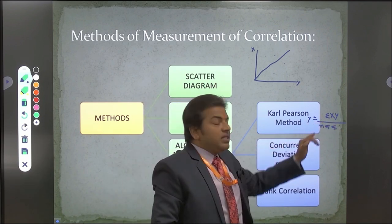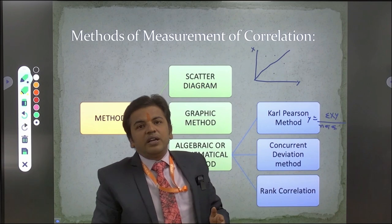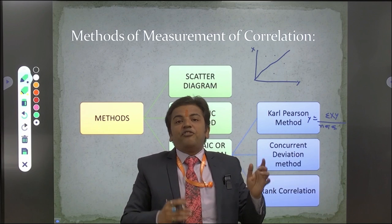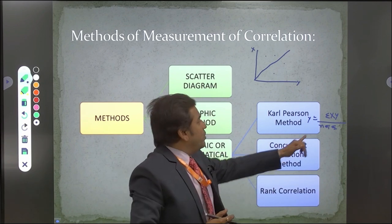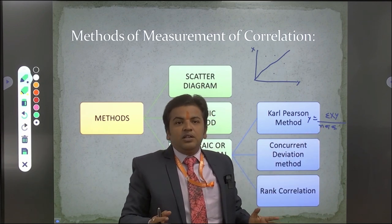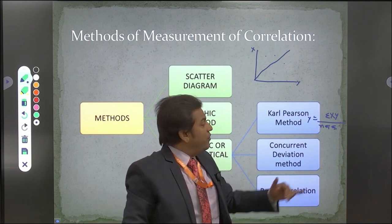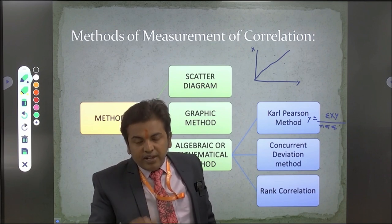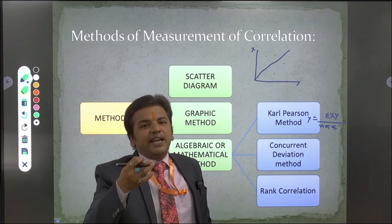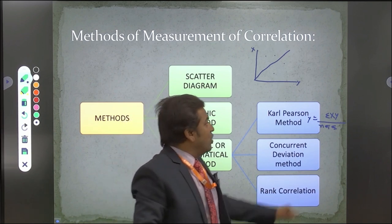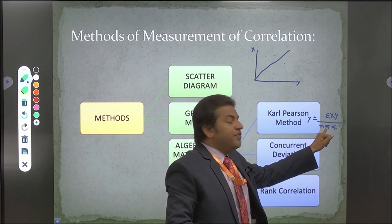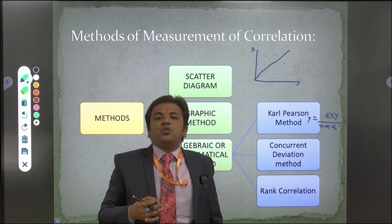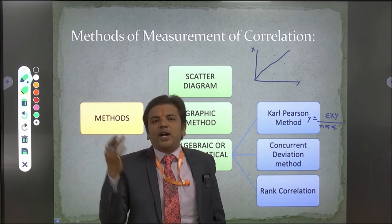N is the number of terms in each series. For example, if we are taking the heights of 10 jawans, we write 10 for N. Standard deviation 1 and standard deviation 2 are the respective standard deviations of X series and Y series.